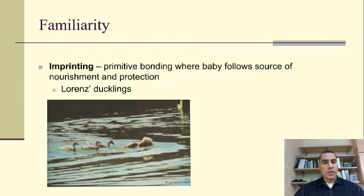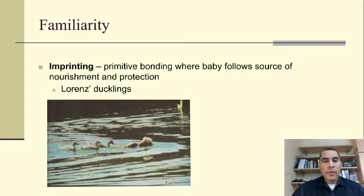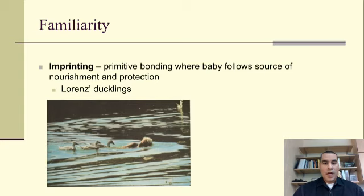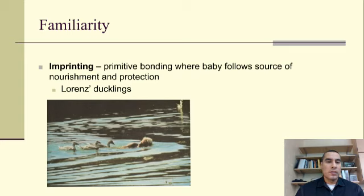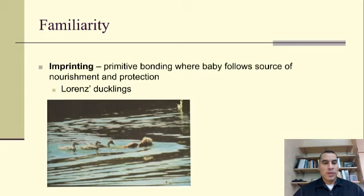Another concept related to attachment, but more primitive — lacking the same emotional connection — is imprinting. Imprinting is a form of primitive bonding that takes place between a baby and its source of nourishment and protection, usually a parent. In the case of Konrad Lorenz, pictured here with his ducklings, it illustrates how organisms can imprint and connect with anything or anyone that provides nourishment and protection. These ducklings followed him as if he were their mother.